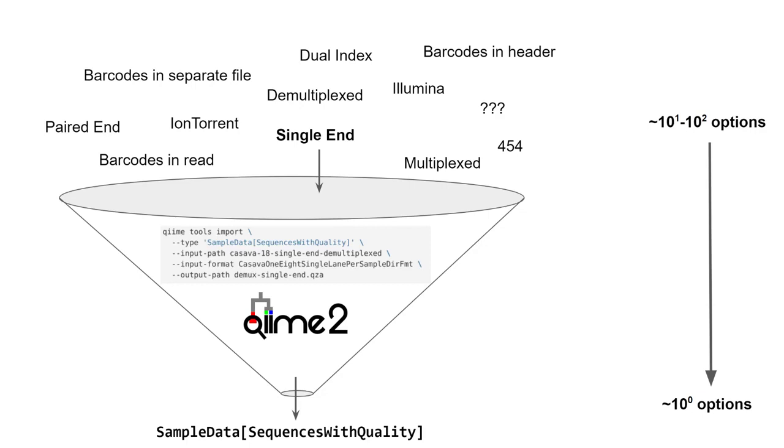And the main reason why this step can be confusing is that there are many, many ways your data can exist in tens to hundreds of variations that exist to date. And only one of those is the correct one for any given data. So you really need to know what type of data you have and in what format it's in.